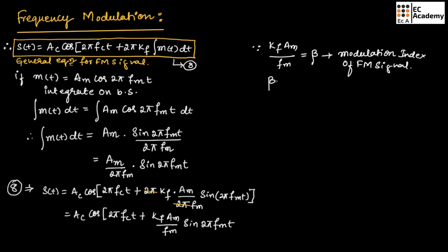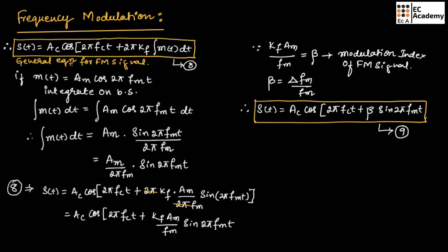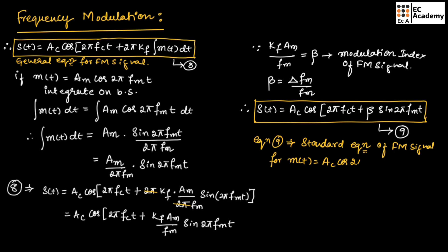So β = Δfm / fm, where kf·AM = Δfm is the maximum frequency deviation. Substituting β into the above equation, the standard expression for the FM signal is: S(t) = AC cos(2π fc·t + β·sin(2π fm t)) — equation 9. This is the standard equation of the FM signal for m(t) = AM cos(2π fm t).